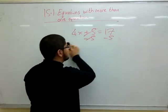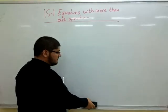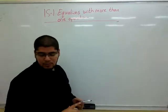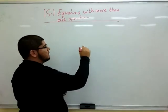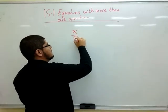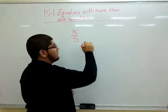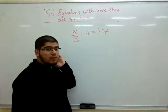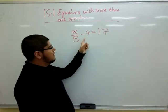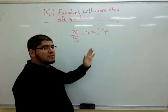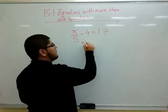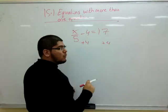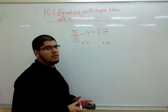Another example, for this lesson we can fly through the examples because they're pretty straightforward. x over 5 subtract 4 equals 17. Again we will undo the subtraction first, so we will add 4 to both sides. Whatever you do to one side, you must do it to the other side as well.